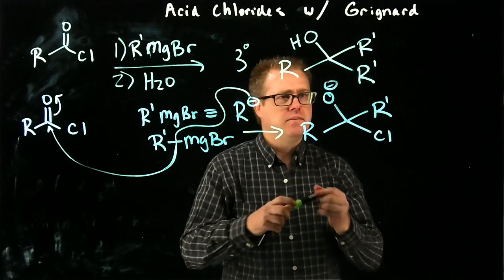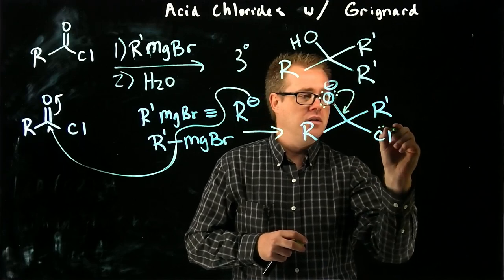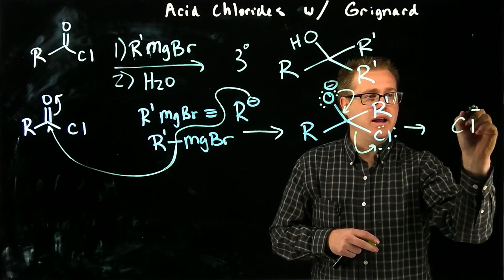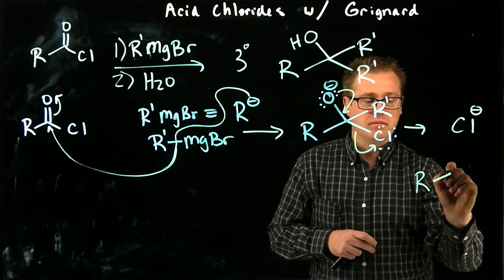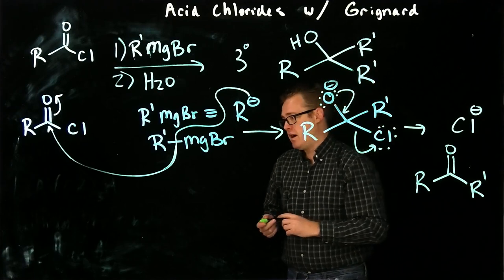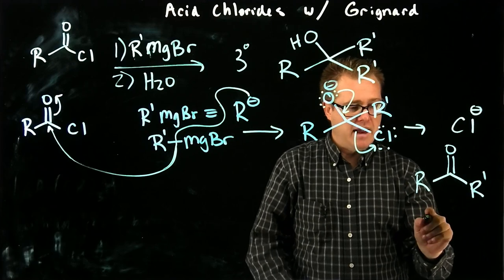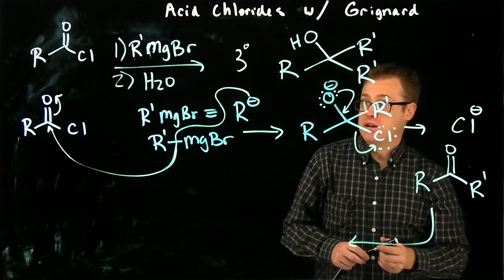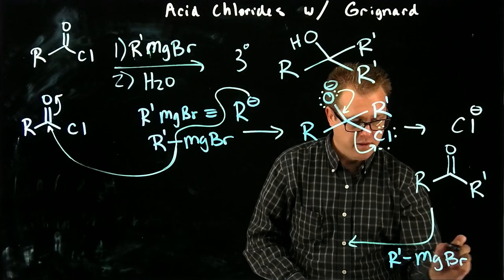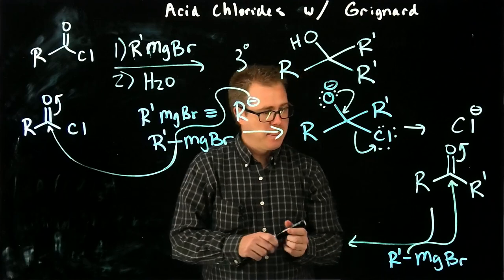The next step: we have three lone pairs on that oxygen, so if we bring those down, we can kick off the chloride. That gives us our chloride leaving and what we've generated is a ketone intermediate. But it doesn't stop there — Grignard reagents are very reactive. Another Grignard comes in, represented as R prime, and attacks to form our tetrahedral intermediate.